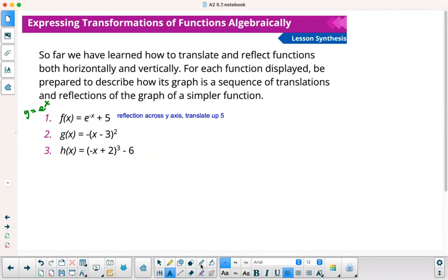When I go to the next one, your simpler function, your most basic function, would just be x squared. The negative on the outside is going to be a reflection across the x-axis. And then the minus 3 on the inside means it's going to translate right 3.